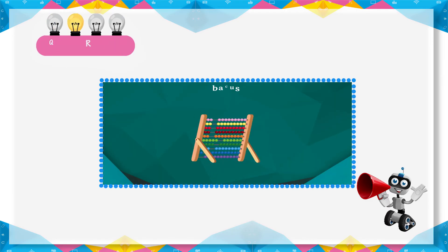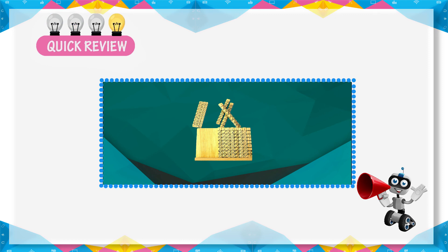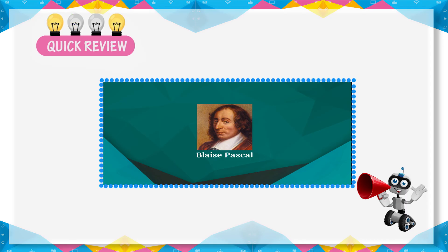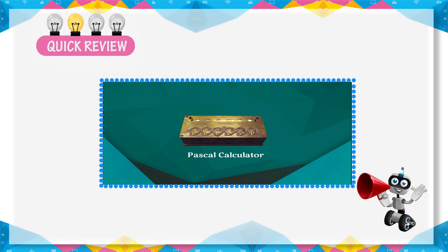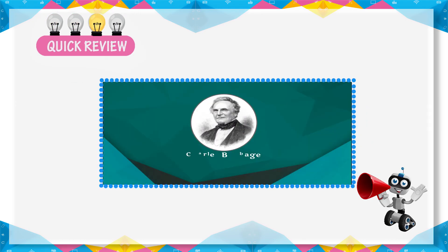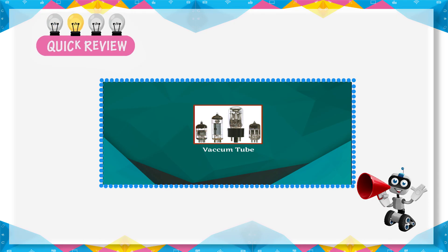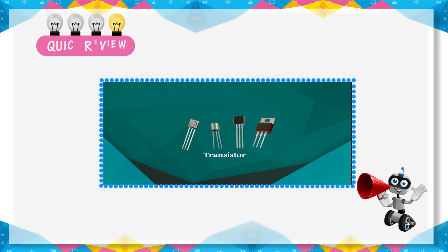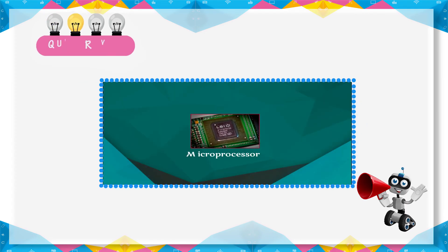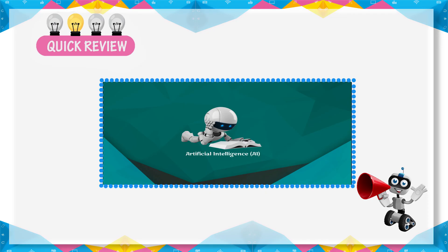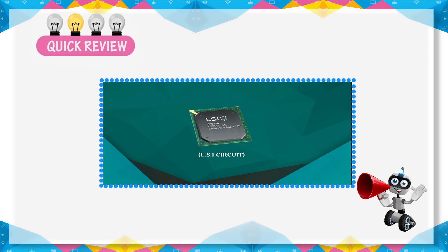Key facts recap: The first calculating device was the Abacus. Napier used bone rods for counting with numbers printed on them. In the year 1642, Blaise Pascal invented an adding machine called Pascal's Calculator. Sir Charles Babbage is known as the father of the computer. The vacuum tube was introduced in the first generation of computers. In the second generation, vacuum tubes were replaced by transistors. Microprocessor is the main concept behind the fourth generation. The fifth generation is based on artificial intelligence. LSI stands for Large Scale Integrated Circuits, and VLSI stands for Very Large Scale Integrated Circuits.